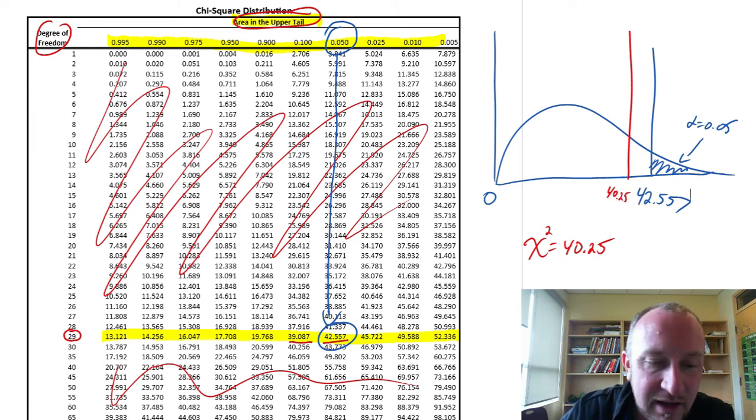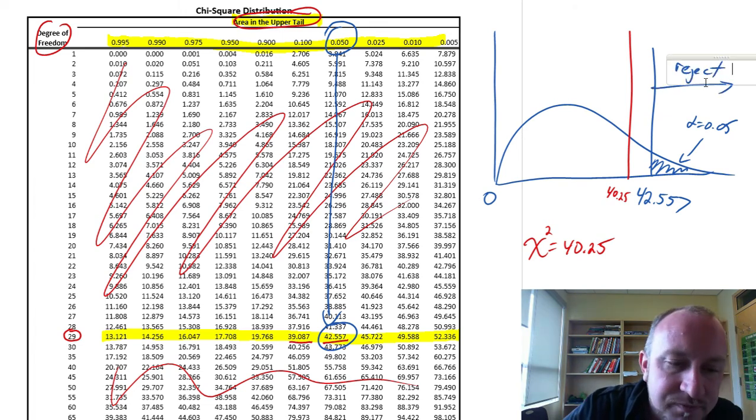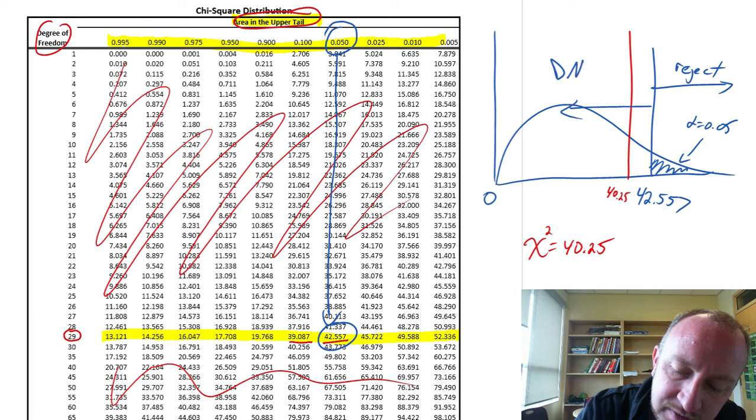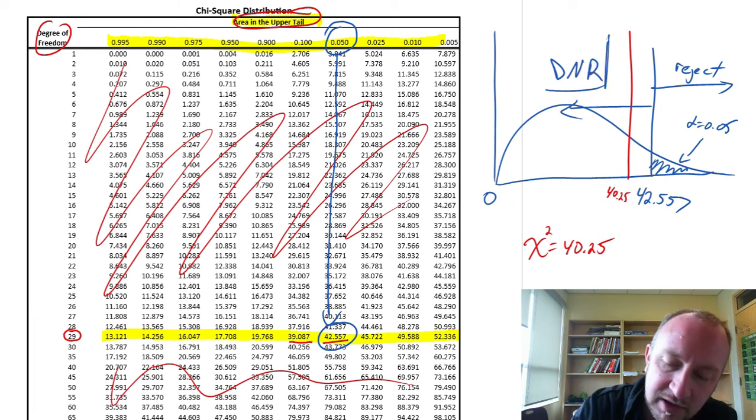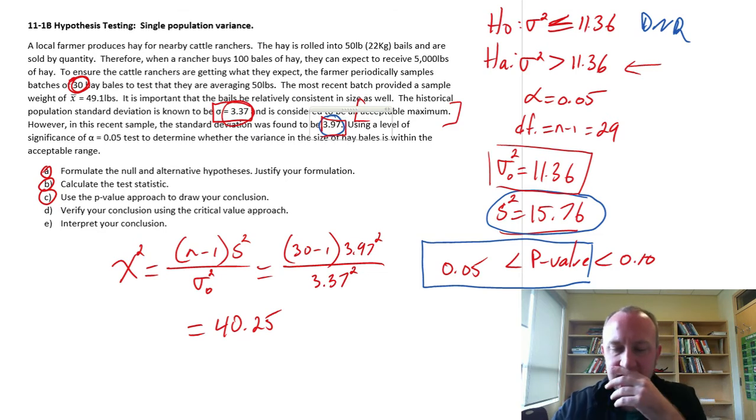As an upper tail test, we would only reject if our test statistic was larger than that critical value. It is most certainly not larger. It is smaller than that critical value. So this is our do not reject space. So there we have it. We have insufficient evidence to show that we have a problem. We appear to be on target, or at least we are within the acceptable range for the variance in the size of our hay bales.